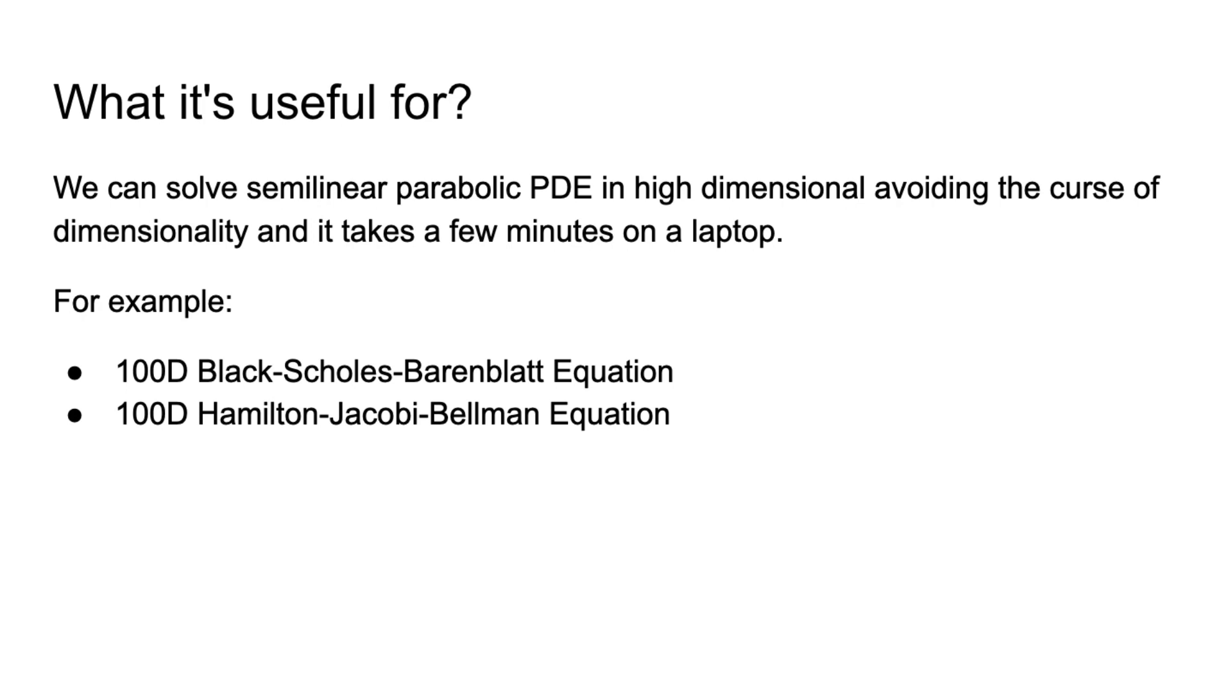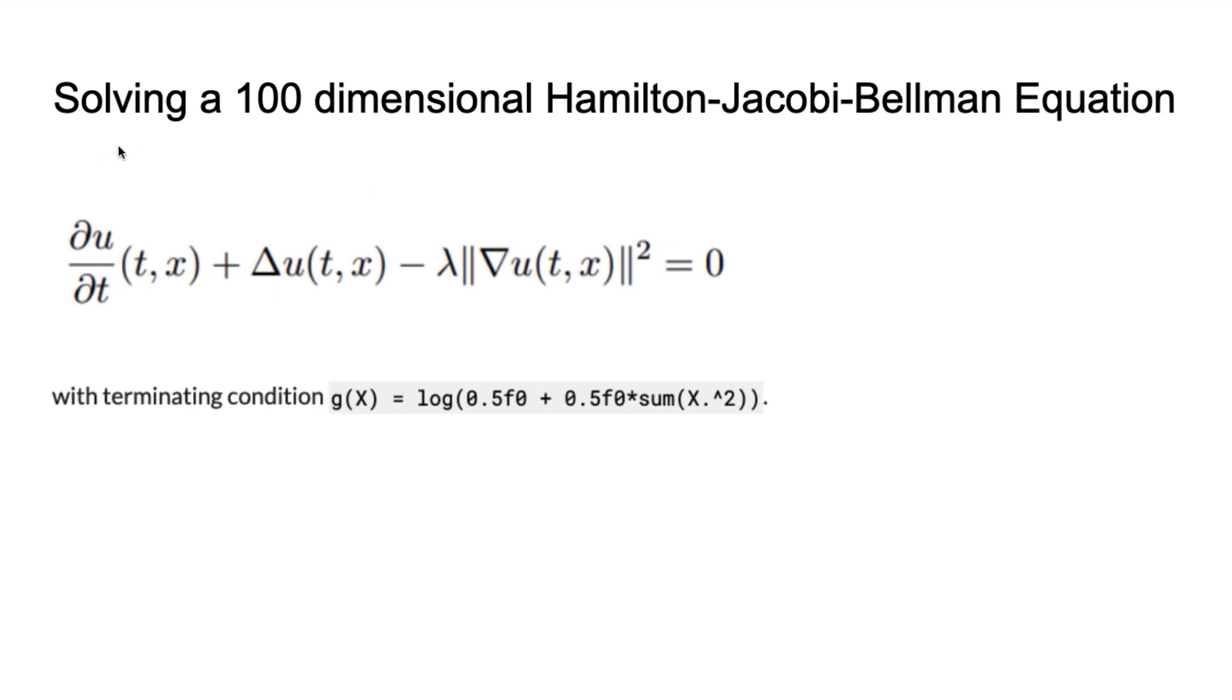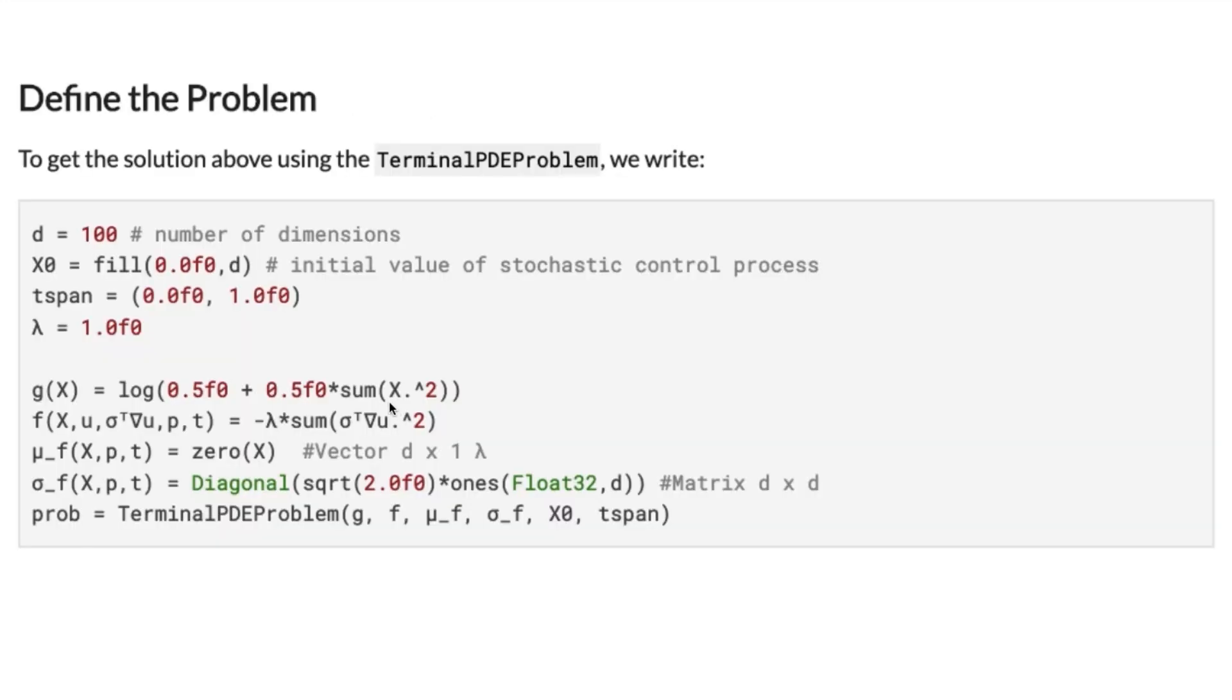Let's look at a detailed example with a 100-dimensional Hamilton-Jacobi-Bellman equation. The equation looks like this formula, and for this formula we have terminal condition g.